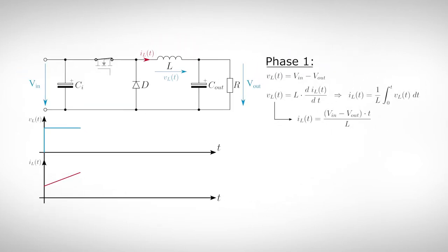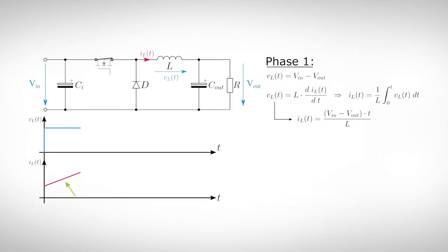Overall, it is our goal to have a constant output voltage, so that is a fair assumption. A constant voltage over an inductor means that its current rises linearly, as we can see with the law of induction. The slope of the current depends on the size of the inductor. It must be dimensioned large enough to prevent going into saturation. Switching off the transistor starts phase 2. The magnetic energy stored in the magnetic field of the inductor keeps the current flowing.